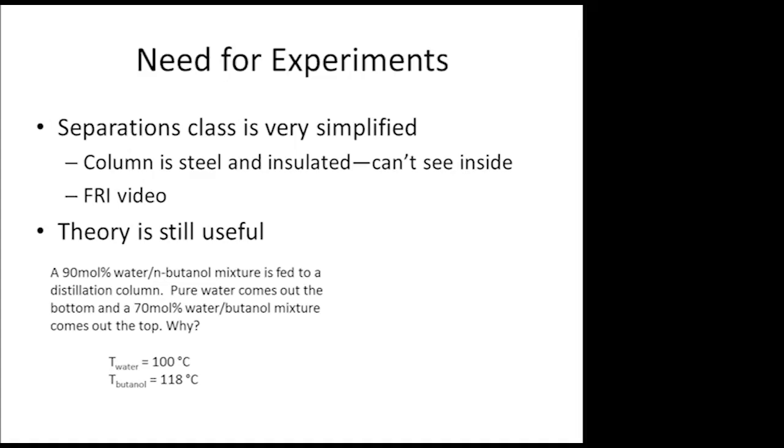You have a mixture of water and butanol. Water's boiling point is 100°C, but butanol's is 118°C. So if you send that to a distillation column, what should happen is that you should get water out the top and butanol out the bottom, right? Heavies go out the bottom, water goes out the top. Now, what happens, so you have a 90% mixture of water and butanol, and out the bottom, you get pure water, and at the top, you get a mixture of 70% water and 30% butanol.